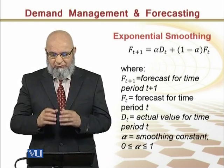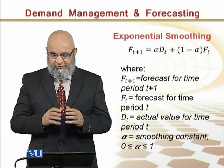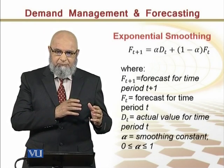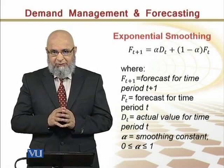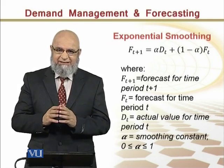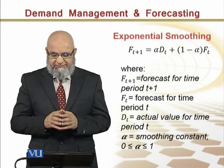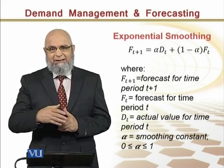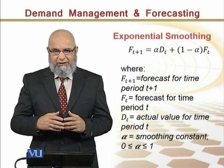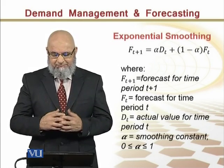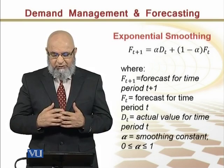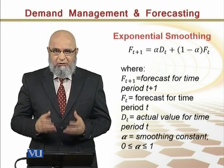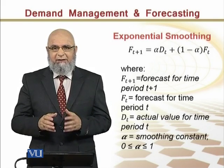The weights are assigned to actual data as well as the forecast. The forecast for the next period is determined by the formula: Ft is the forecast for the current period T, and Dt is the actual value for the current time period T. Alpha is the smoothing constant we use, and it ranges between 0 and 1.